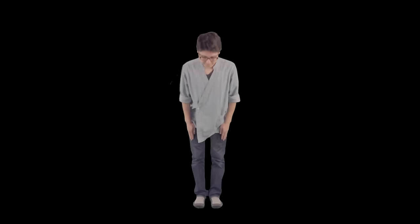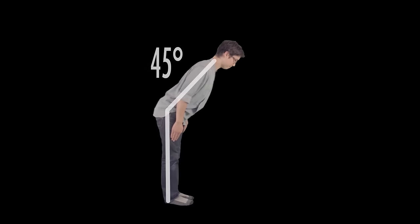First, Koichi stands upright. This is called Seiritsu. He then bends forward at 45 degrees over the span of one complete breath.